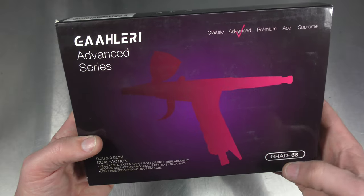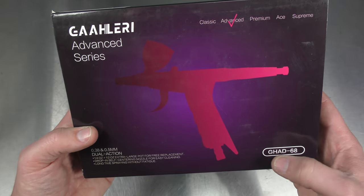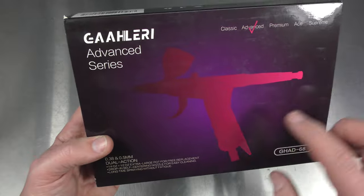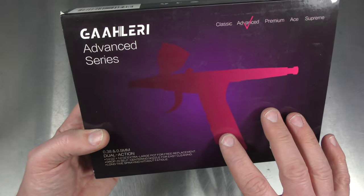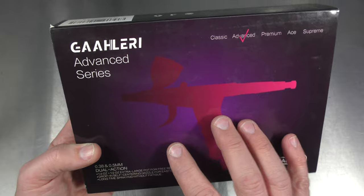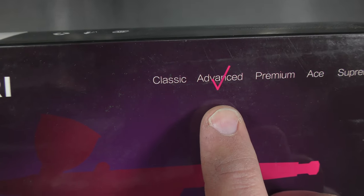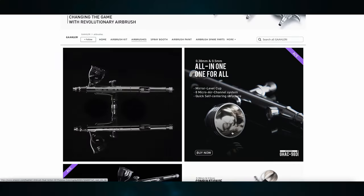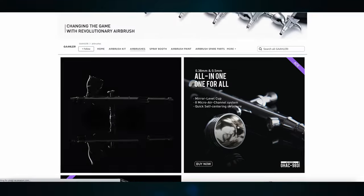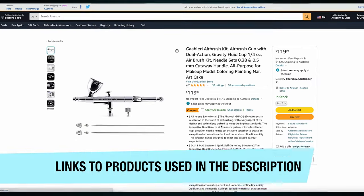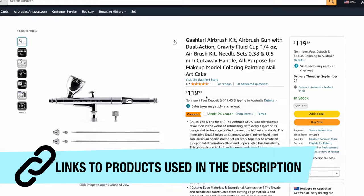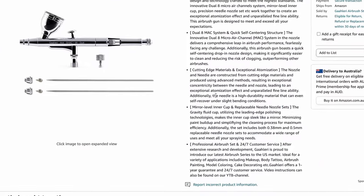On top of the two 98Ds they also sent me the GHAD68. This is a trigger style brush. I'm not going to look at this one today but I will showcase this one in a later video. You can see that this one is from the Advanced range. So at time of recording this video, this particular brush is $119.99 USD and I'll pop a link to this airbrush in the description below so you can check it out.